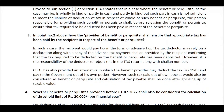There are two options to discharge TDS in in-kind cases. Either the recipient pays the tax component as advance tax and shares the advance tax challan with the payer, who then files TDS return based on that challan — CBDT has amended TDS return forms to allow this. Or the payer can gross up the value: the ₹50,000 benefit is grossed up and TDS is paid from the payer's own pocket. Either option must be used to comply.